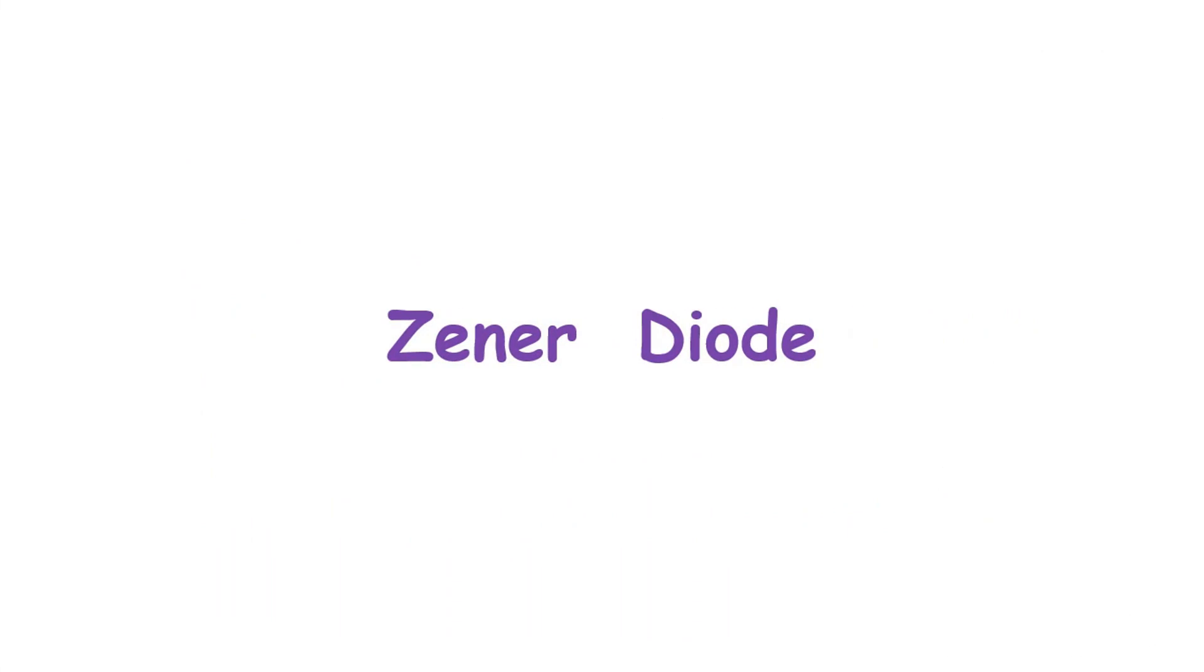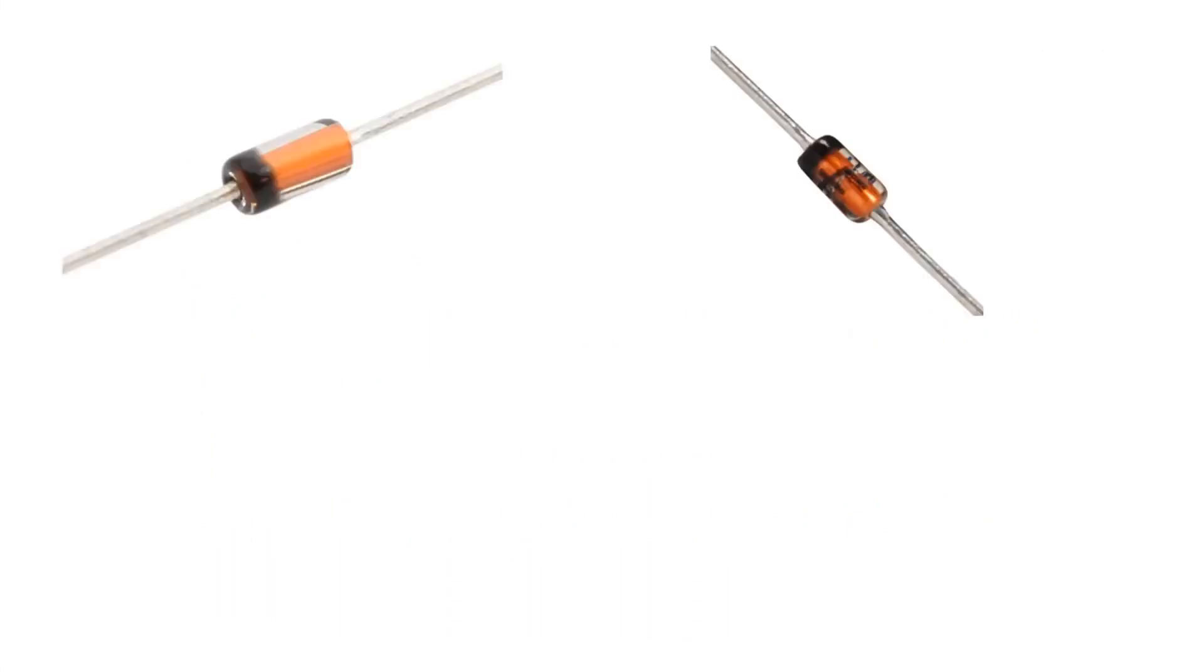Zener diode. They are diodes that keep the voltage applied to their ends constant. Zener diodes do not pass current up to a certain voltage value in the reverse direction. This voltage is called a brake or Zener voltage. When connected to the circuit in the right direction, it works like a normal silicon diode. When it is connected in the opposite direction, it does not conduct until the breakdown voltage, and when the breakdown voltage is exceeded, it conducts current and turns on. When the reverse voltage is removed, the Zener diode returns to its normal state. Since Zener diodes work in reverse polarity, they are reverse connected to the circuit. The braking stress value is determined by adjusting the amount of additive at the production stage. The symbol is like this.